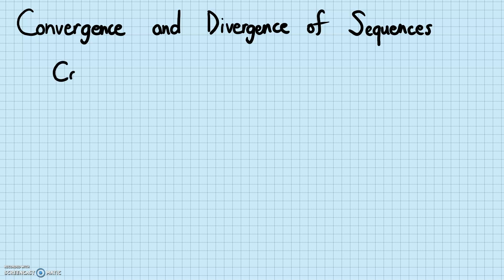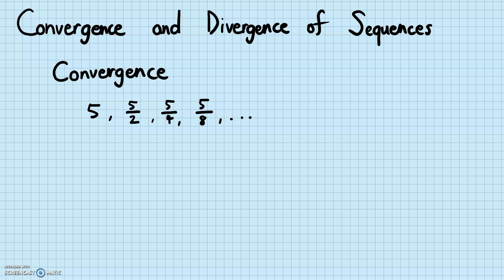For example, convergence: let's say I have the sequence five, five-halves, five-fourths, five-eighths, etc. The numbers are getting smaller and smaller, reaching a certain value. The denominator is becoming bigger and bigger.